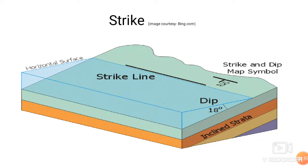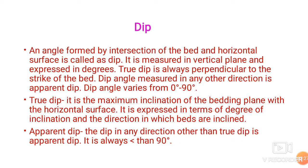Here the strike line is shown. Strike line indicates the direction of these inclined beds. The dip angle is also shown — the beds are inclined at 18 degrees with respect to the horizontal plane. We can see that dip and strike are perpendicular to each other, and the strike direction is shown in the diagram. The next term is Dip.